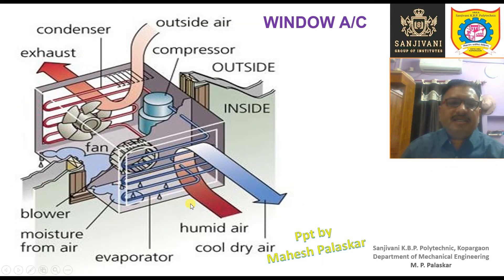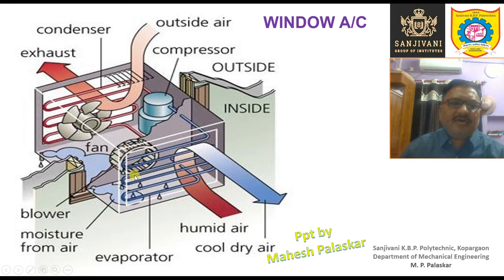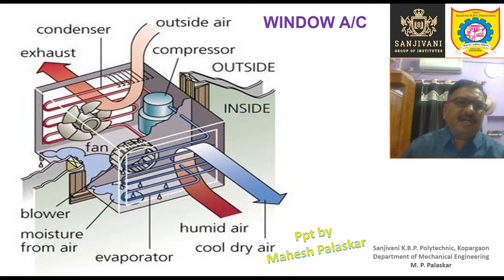Looking at a picture of the Window Air Conditioner, you can see the compressor, condenser coil, condenser fan, and condenser motor on the outer side. On the inner side we have the evaporator coil and the evaporator fan, which is a centrifugal fan. The condenser fan is an axial fan. Sometimes a common motor may also be used for both the condenser fan and the evaporator fan.